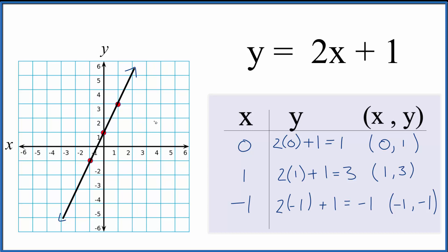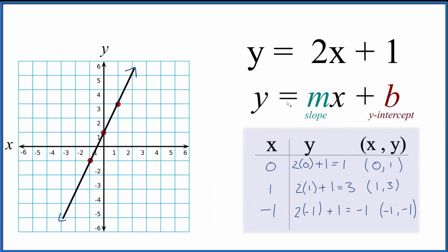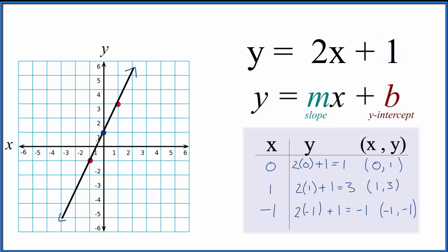Let's do another method to check our work. I like this method better — it's quicker once you've learned it. We use what's called the slope-intercept format. We have y equals 2x plus 1, and the general format is y equals mx plus b. So b is the y-intercept — that's where our line is going to cross the y-axis. We can see if we go to y equals 1 right here, that's where we cross the y-axis. So b is 1, and it matches what we found before.